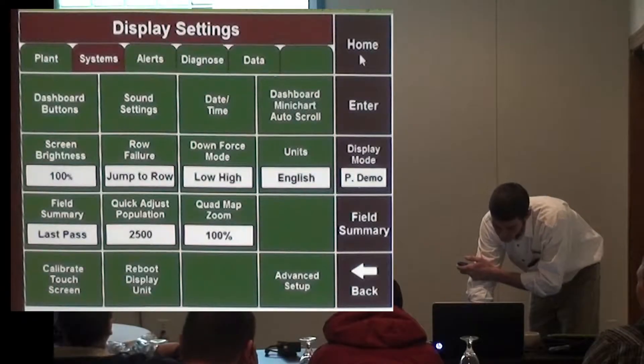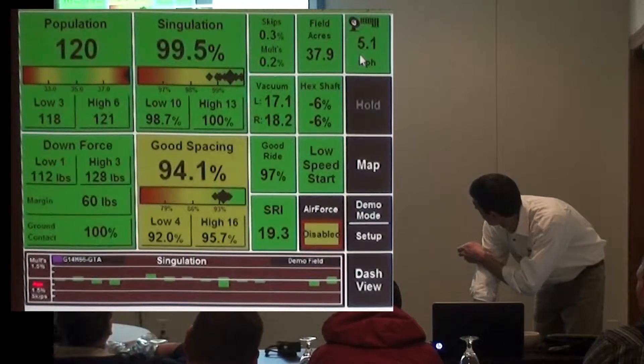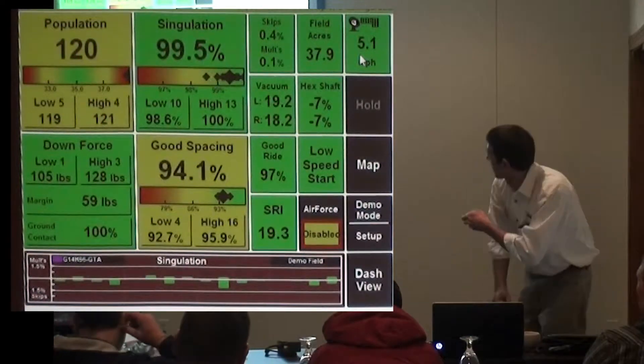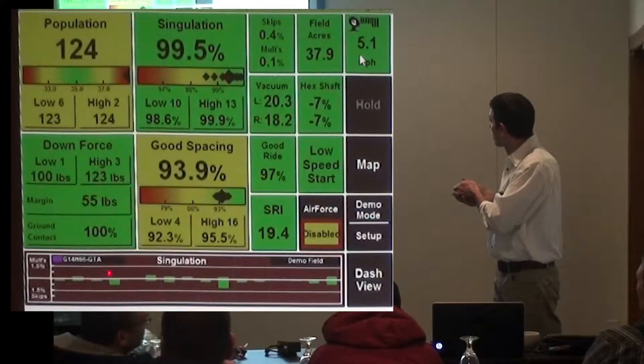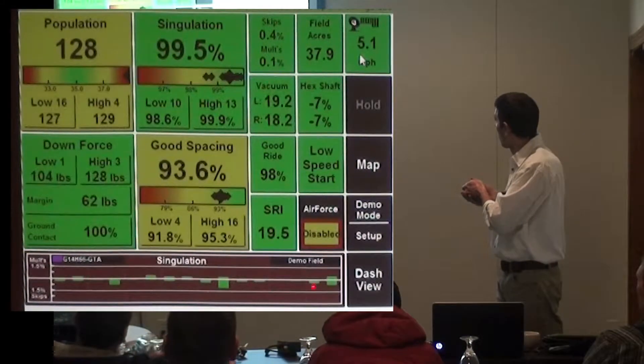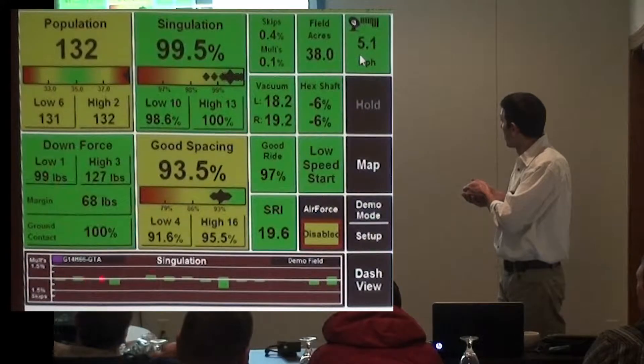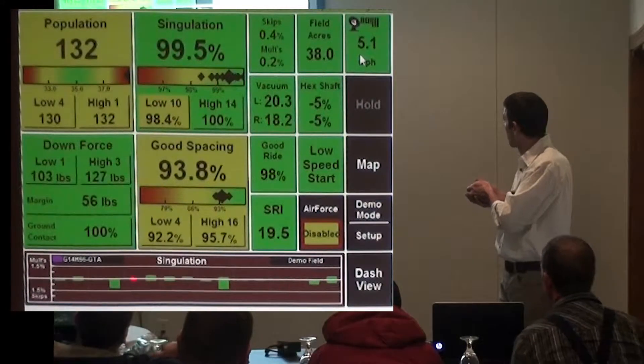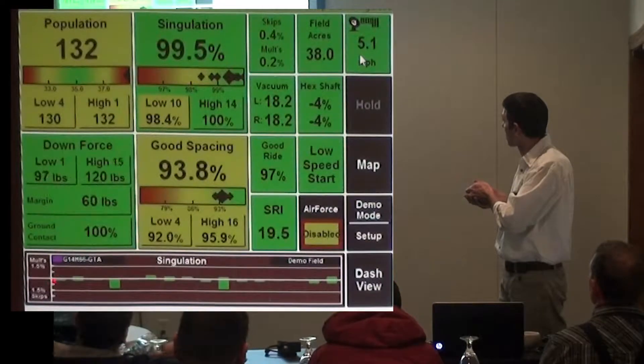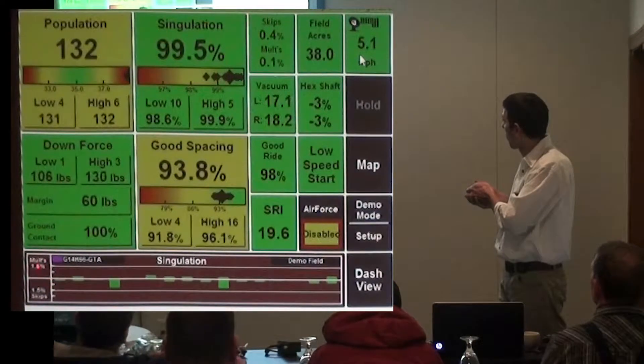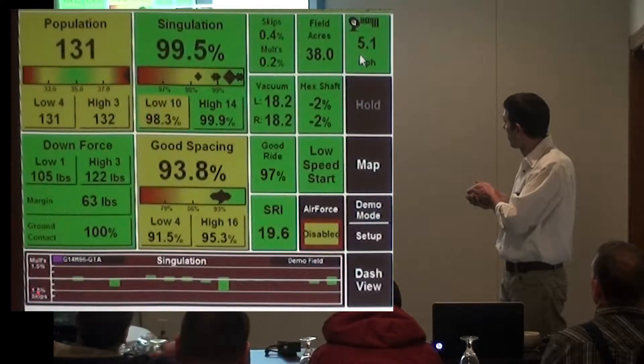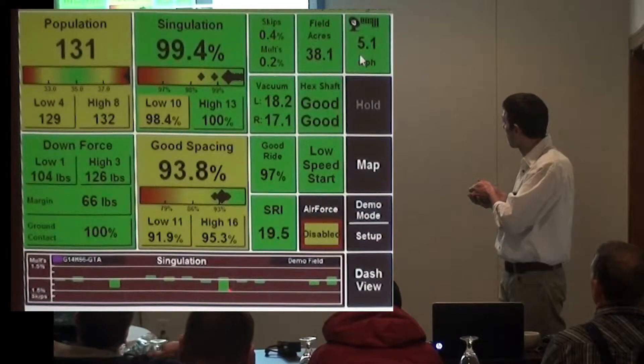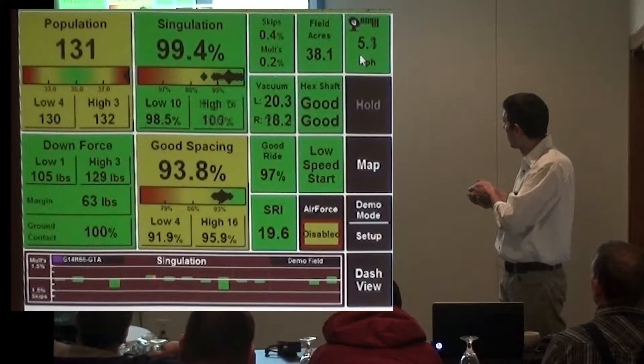Okay, I'm going to jump back to home real quick. This is called the mini scroll chart. Each one of these rows represents a row on our 16 row planner. This line right down the center would be 100% perfect. If there's a bar above the line, it's a double or skip. Below the line means that row is skipping even more. These above the line are doubling.